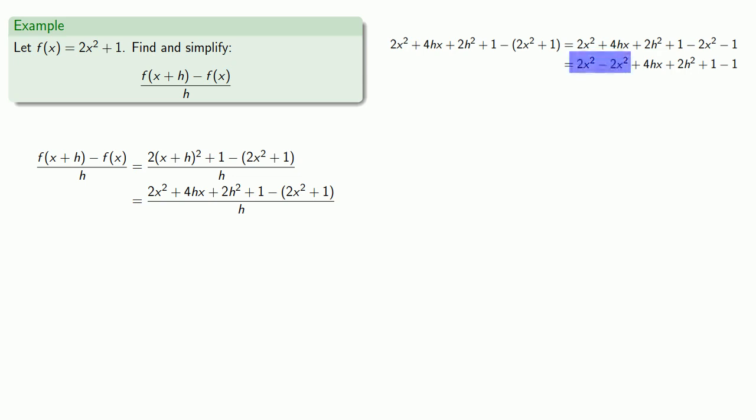2x² - 2x², well, that's gone. 4hx, still there. 2h², still there. And +1 - 1 is also gone. And so we can replace our original numerator with 4hx + 2h².